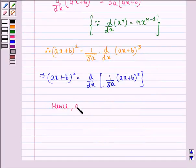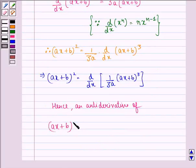Hence, an anti-derivative of ax plus b, the whole square, is 1 by 3a, ax plus b, the whole cube.